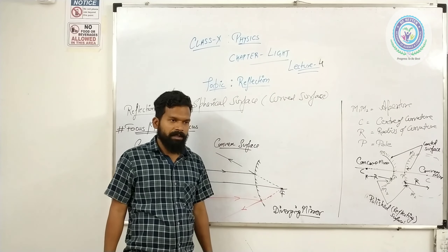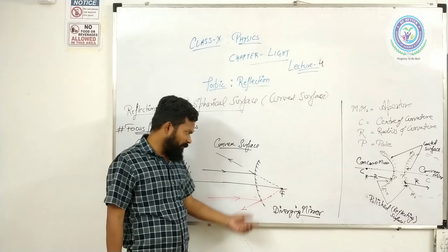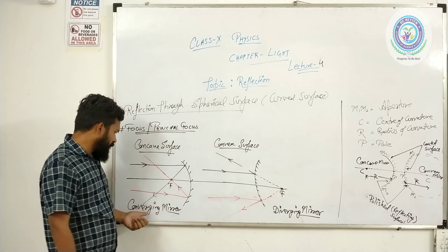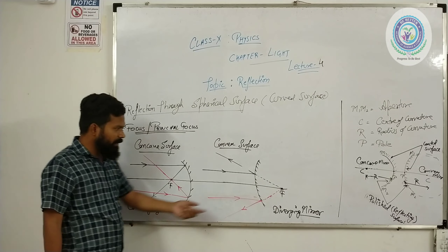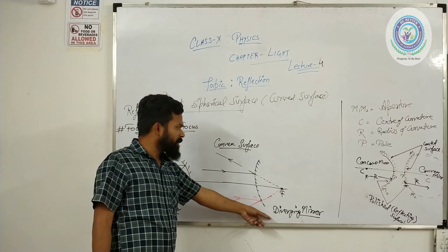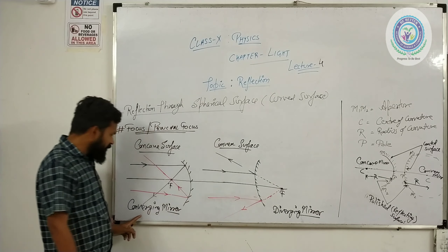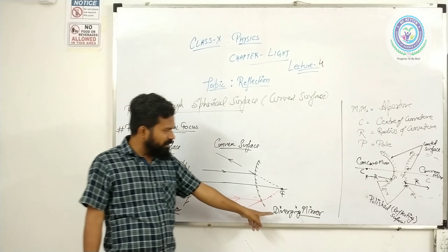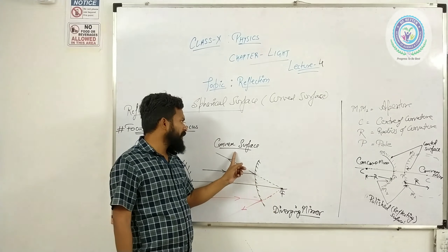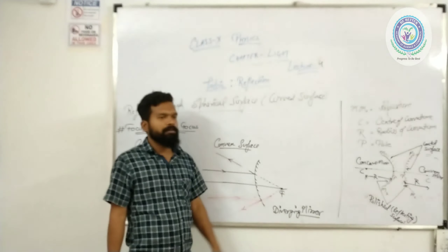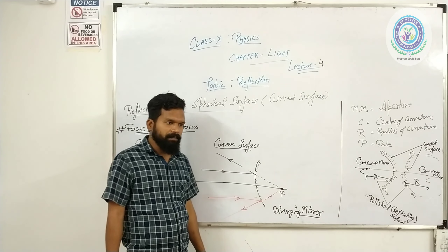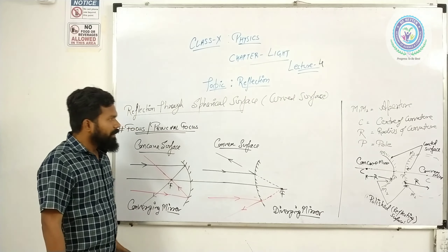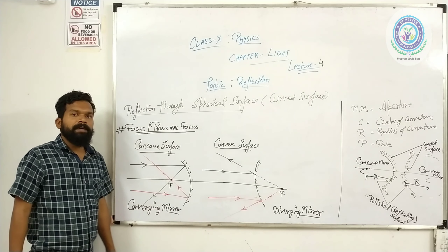There are two types of mirrors — one is converging mirror and the second one is diverging mirror. Converging mirror — यह हम next class में देखेंगे।